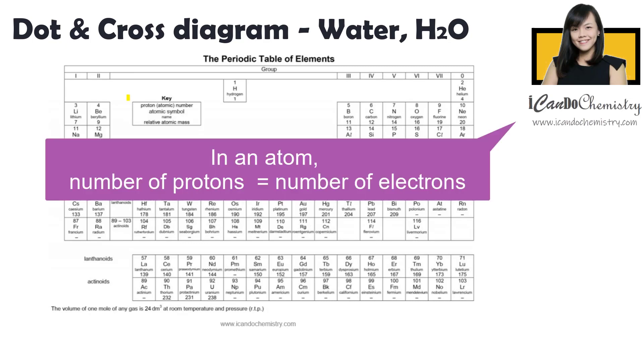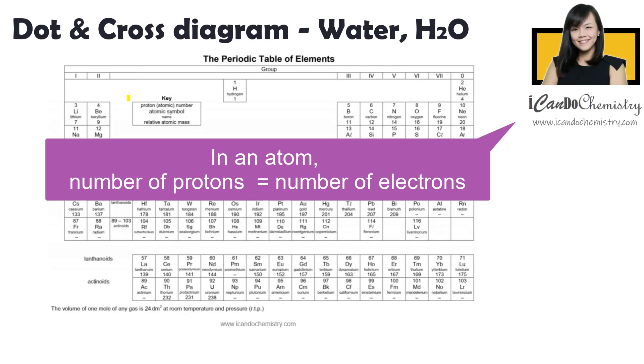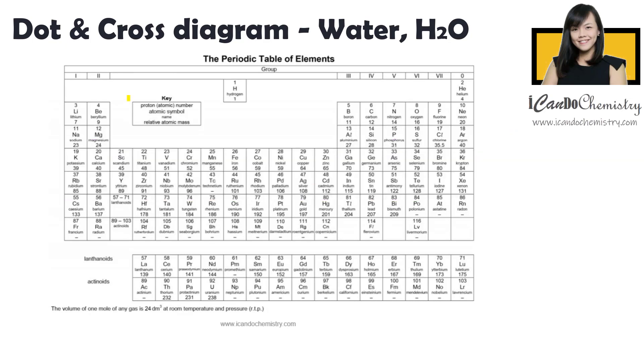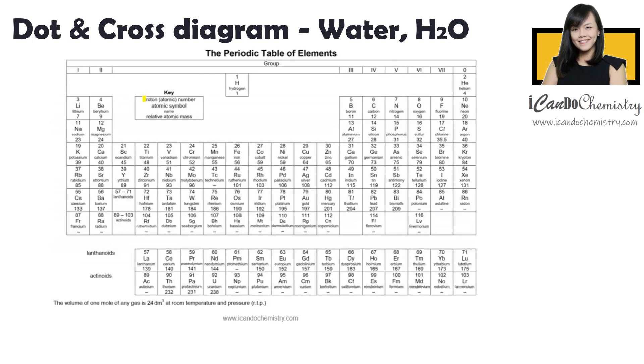Now back to the atomic structure, we know that in an atom, the number of protons and electrons must be the same. Now in the periodic table that you have in the exam, you can just refer to the key to know what each number represents. So the top number actually is the proton number, or we can say it's the atomic number, which means it is the number of protons.